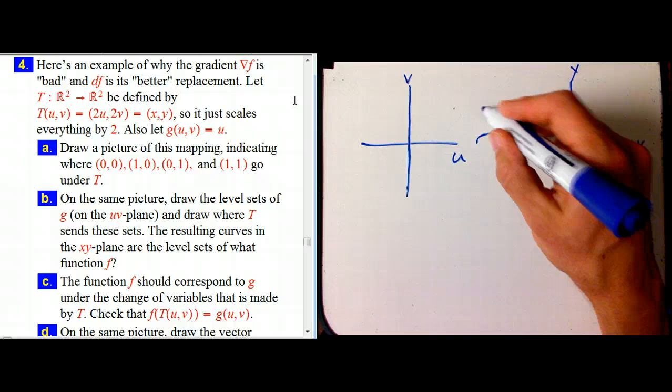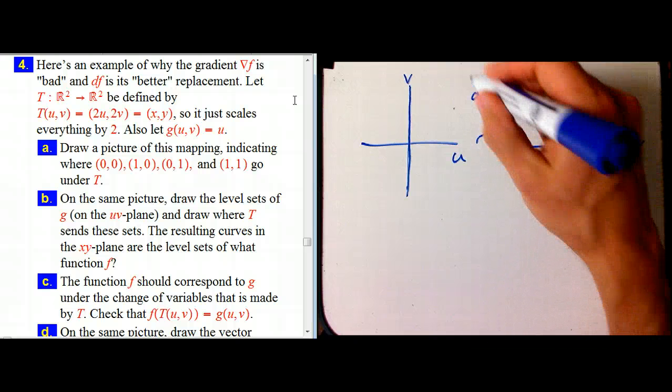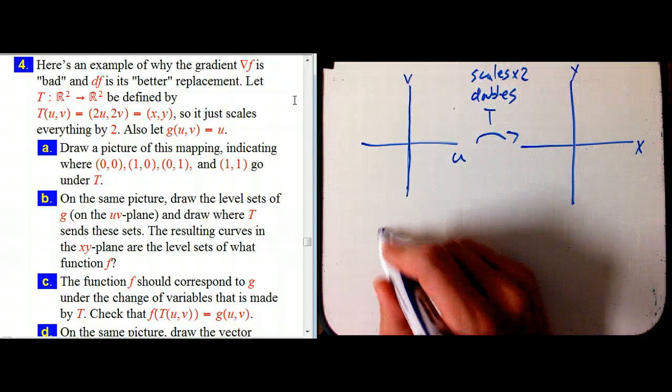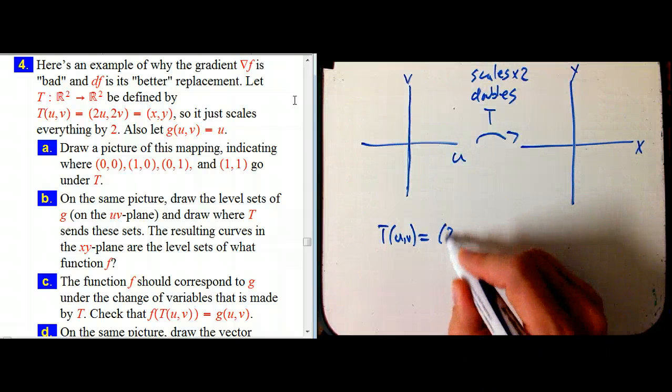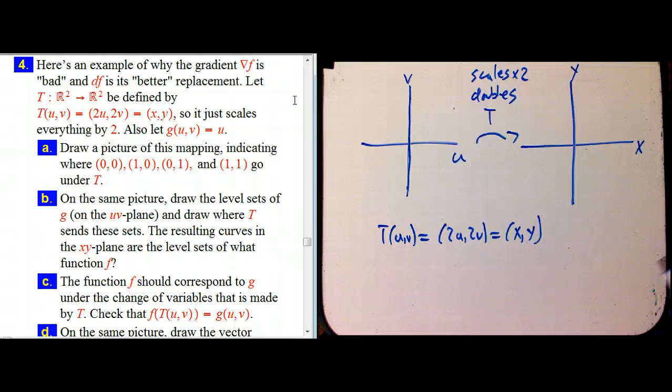So we've got this map T and it just doubles everything. Or in other words, it scales times two. T of uv is two u, two v. And that's going to be the x, y coordinates.